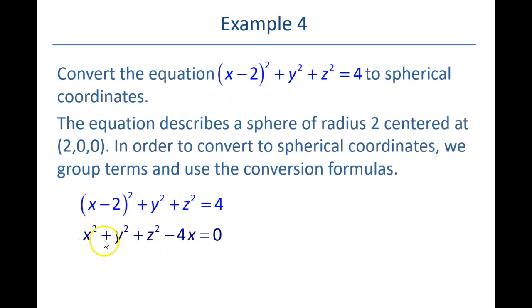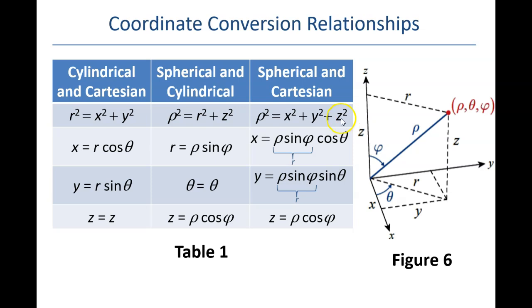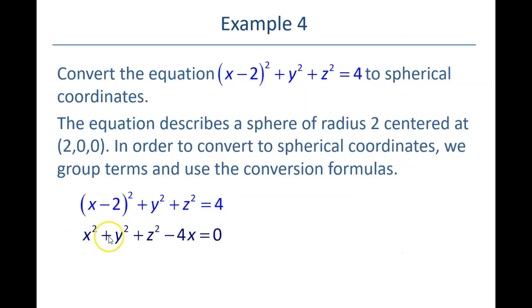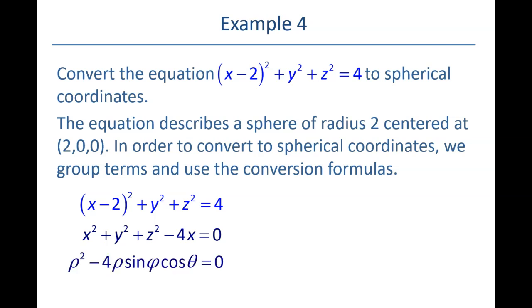Okay, now what is x² + y² + z²? x² + y² + z² is ρ². So we're going to replace that in the equation with ρ². And then the minus 4x, well, x is equal to ρ sin φ cos θ. So minus 4 times all of this will be what we replace for x in the equation. So this all becomes ρ², and the x becomes ρ sin φ cos θ.